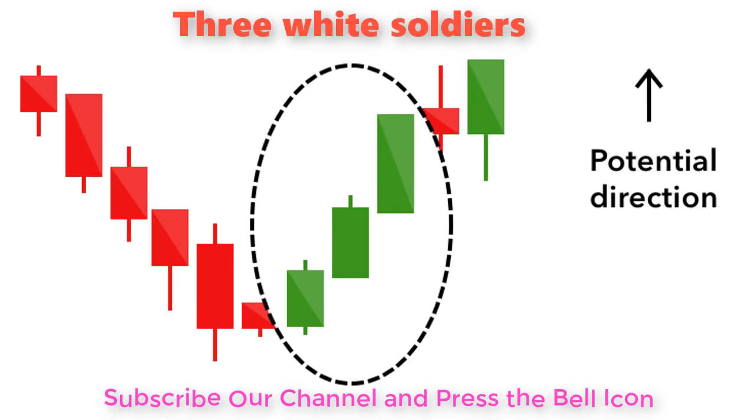Three White Soldiers. The Three White Soldiers pattern occurs over three days. It consists of consecutive long green or white candles with small wicks, which open and close progressively higher than the previous day. It is a very strong bullish signal that occurs after a downtrend and shows a steady advance of buying pressure.